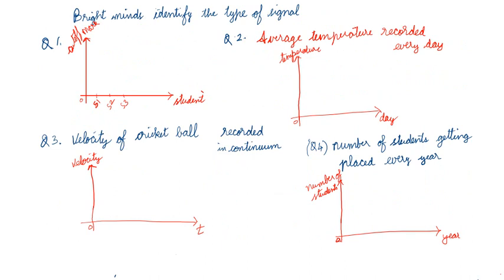Now, here are four practice questions — identify the type of signal for each. Question 1: y-axis is the cutoff mark, x-axis is the student number (student 1, student 2, student 3...). Note: the x-axis here is not time. Identify whether it is analog or digital, and continuous time or discrete time.